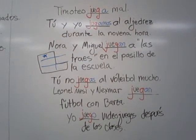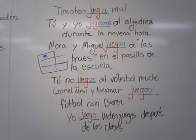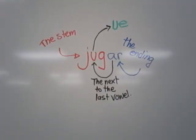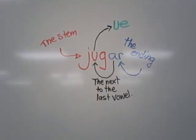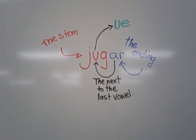Yo juego videojuegos después de las clases — I play video games after classes. You'll notice that yo is on the upper left of our chart, inside the boot, and therefore the U changes to UE. Well, that's all for our verb jugar. I hope you've had a good time, and be sure to practice the exercises on the website to practice this verb.